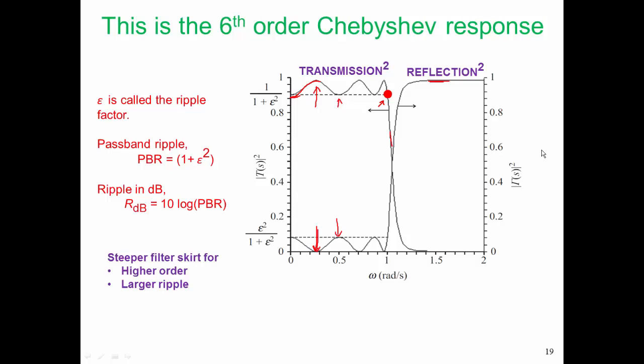Generally, we pick the ripple to be reasonably small, and a ripple factor of 0.1 is fairly small. That's about 0.04 dB. But even a ripple of 0.1 dB would be fairly acceptable.